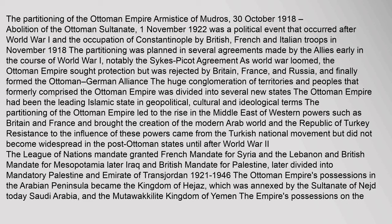The huge conglomeration of territories and peoples that formerly comprised the Ottoman Empire was divided into several new states. The Ottoman Empire had been the leading Islamic state in geopolitical, cultural, and ideological terms. The partitioning of the Ottoman Empire led to the rise in the Middle East of Western powers such as Britain and France, and brought the creation of the modern Arab world and the Republic of Turkey. Resistance to the influence of these powers came from the Turkish National Movement but did not become widespread in the post-Ottoman states until after World War II. The League of Nations Mandate granted French Mandate for Syria and the Lebanon, and British Mandate for Mesopotamia, later Iraq, and British Mandate for Palestine, later divided into mandatory Palestine and Emirate of Transjordan.